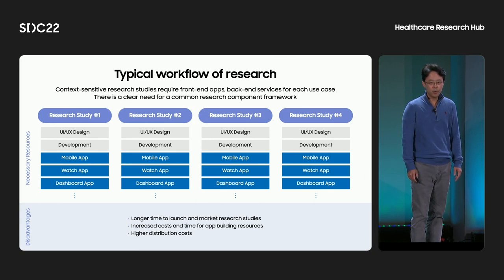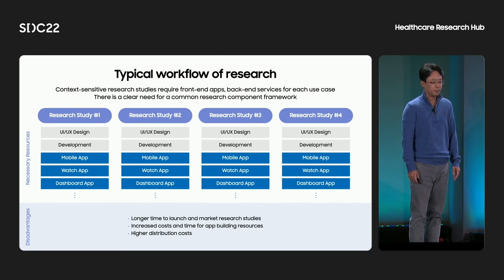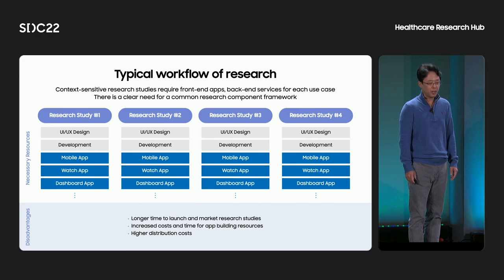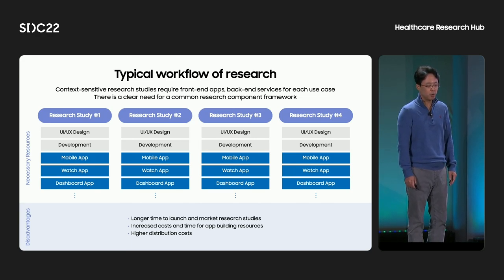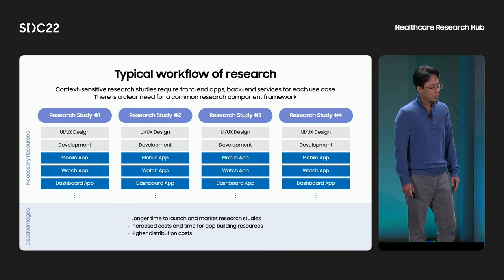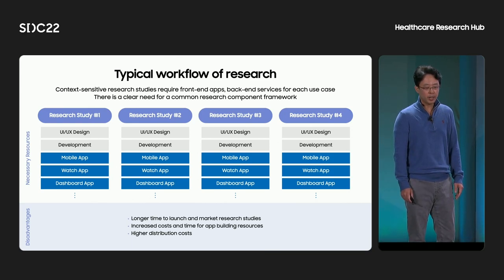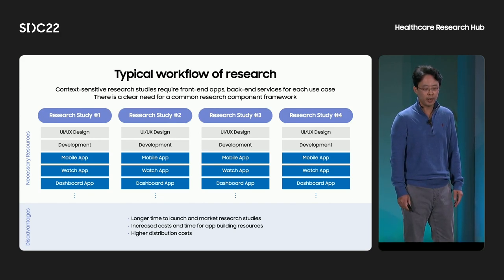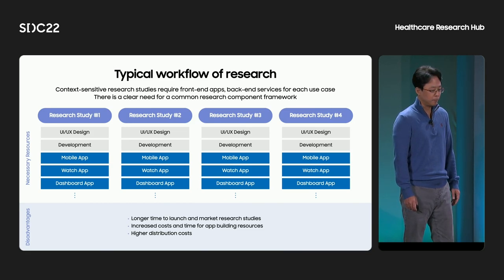One of the big efforts of Samsung was to understand and highlight gaps and requirements within the current system. The current structure for context-sensitive research studies requires front-end apps and back-end services for each case, which highlights the clear need for a common research component framework. This model also takes a long time to launch and market research studies, and it leads to increased cost and time for building resources. In addition, there is a higher distribution cost.